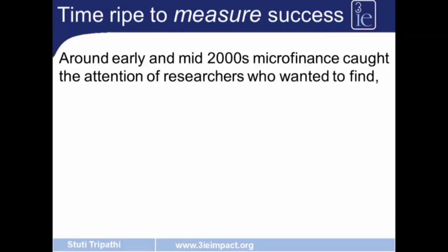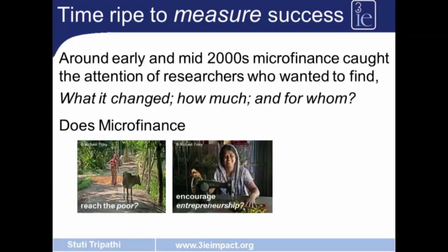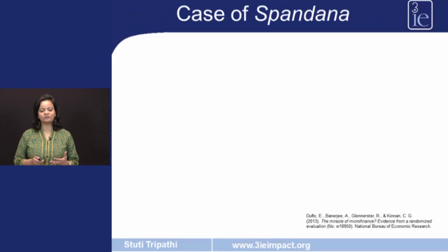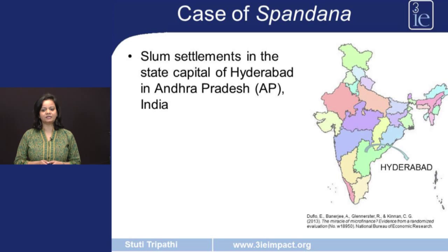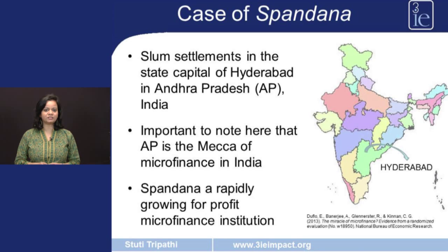Around the early and mid 2000s, microfinance caught the attention of researchers who wanted to find what it had changed, by how much, and for whom. Does microfinance actually reach the poor? Does it encourage entrepreneurship and thereby alleviate poverty and empower people? The study of Spandana, a microfinance organization in India, is a case in point. It looked at the impact of Spandana's microfinance operations in Hyderabad, the capital city of Andhra Pradesh — the mecca of microfinance in India. Notably, Spandana is a for-profit MFI.